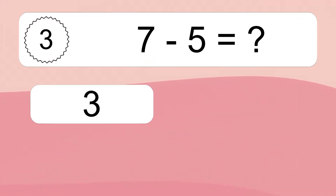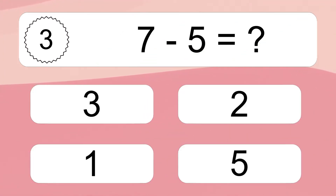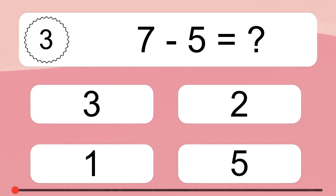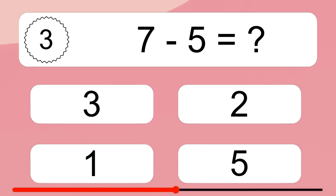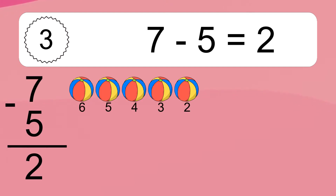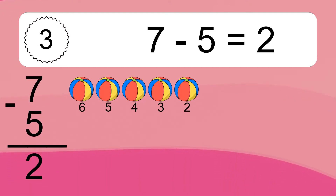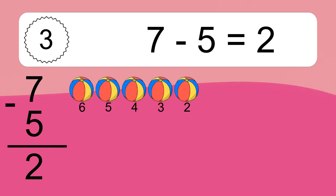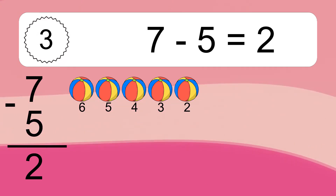7 minus 5 equals what? 7 minus 5 equals 2. Let's count it: 6, 5, 4, 3, 2.